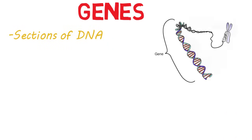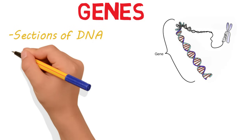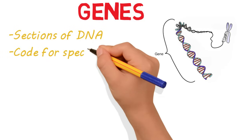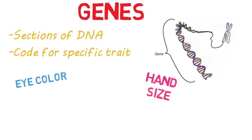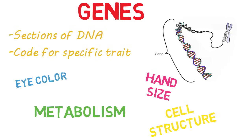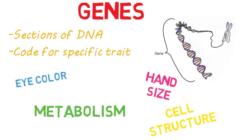Genes are sections of DNA which code for a specific trait. You have literally thousands of genes — genes for eye color, hand size, metabolism, cell structure, and every other piece of your body.